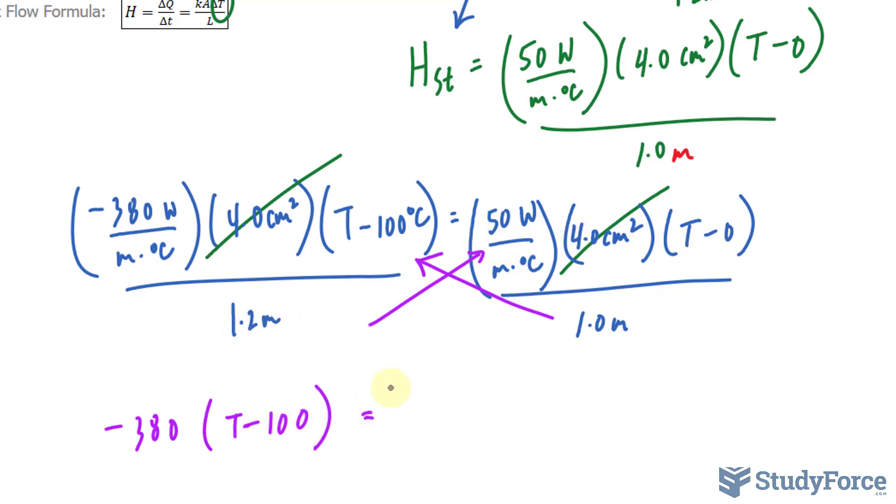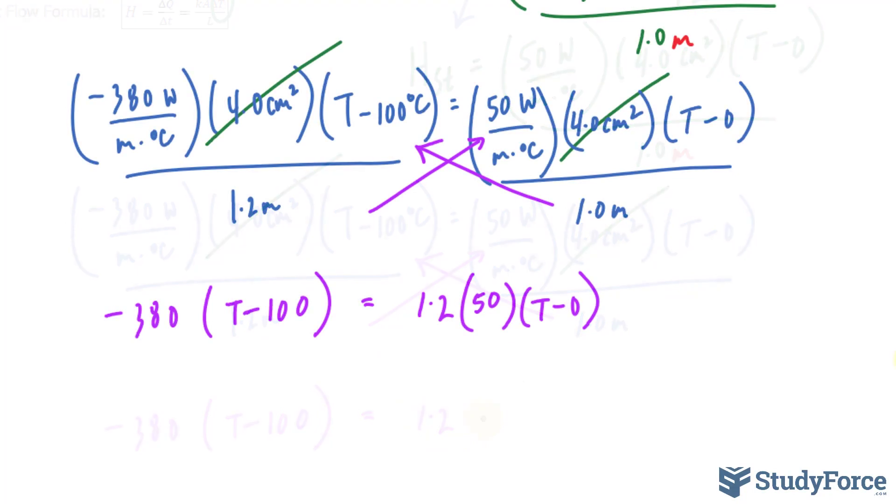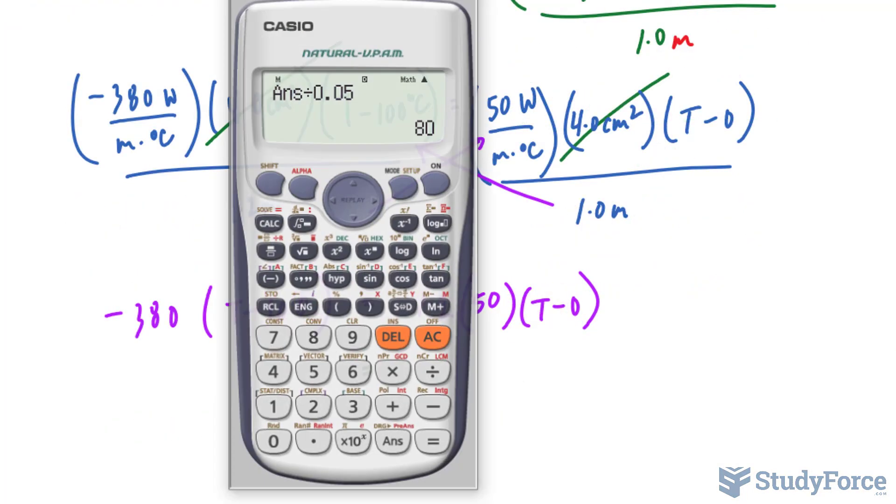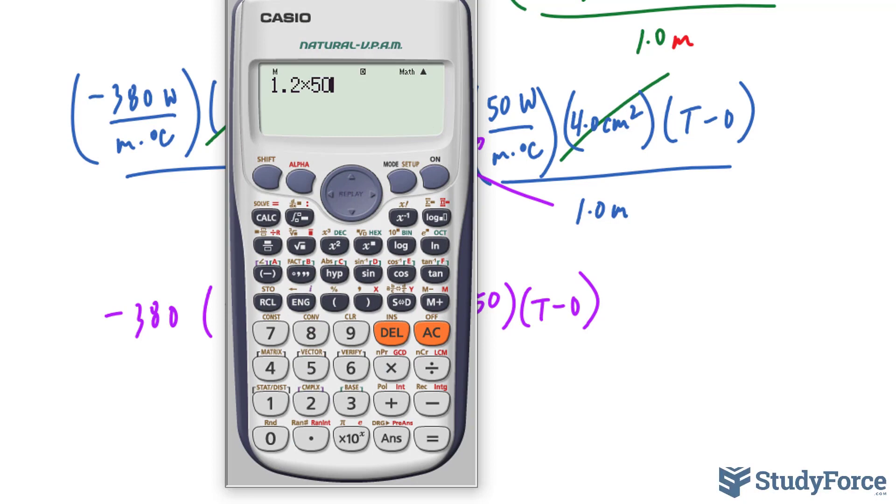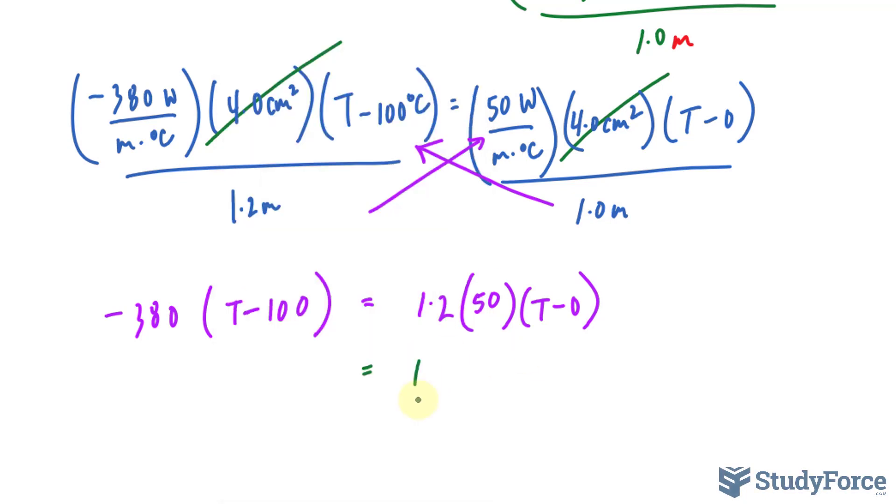1.2 times that expression. Alright, we're getting close. So this part becomes 1.2 times 50, that's 60T. And over here, I'll expand negative 380T plus, negative and negative make a positive.